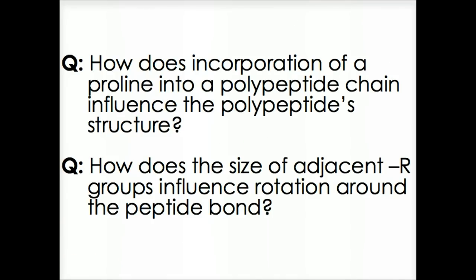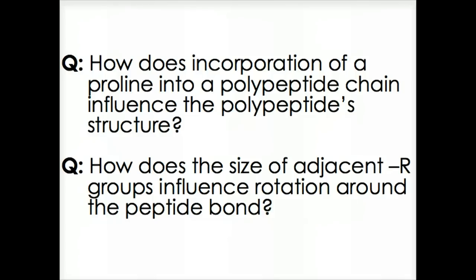So now answer these questions: How does incorporation of a proline into a polypeptide chain influence the polypeptide chain structure? And how does the size and charge on adjacent R groups influence the rotation around the peptide bond?